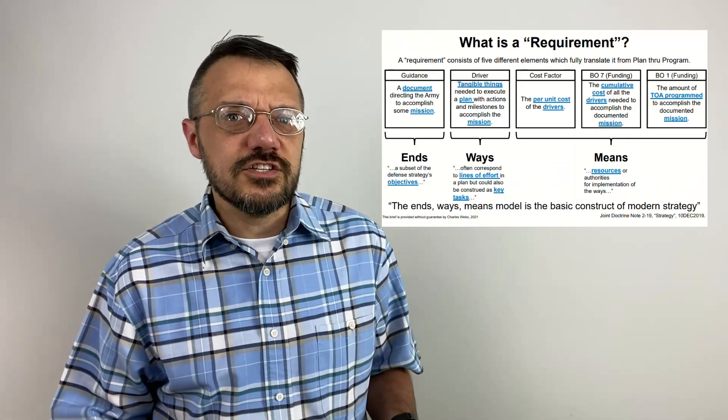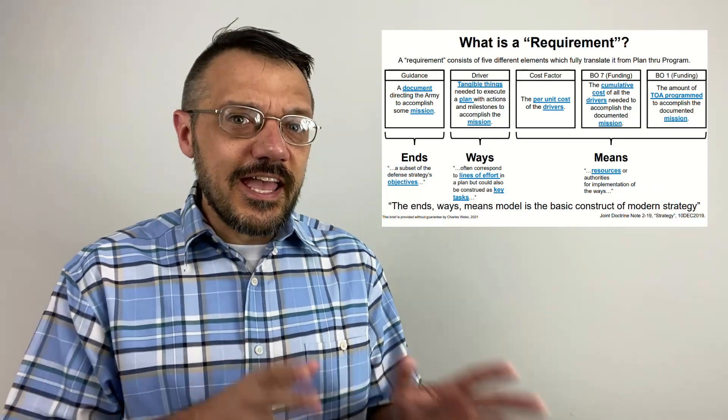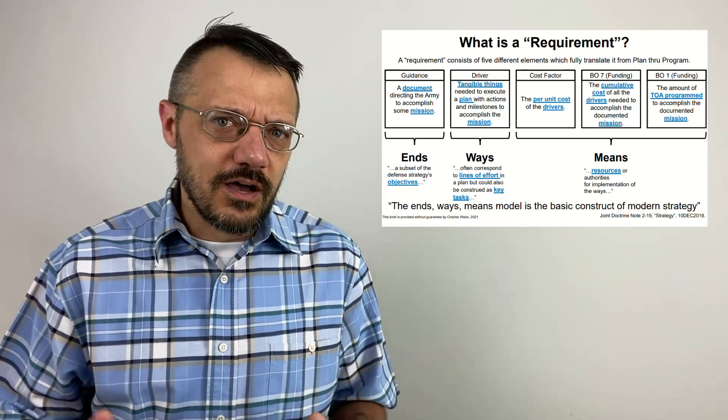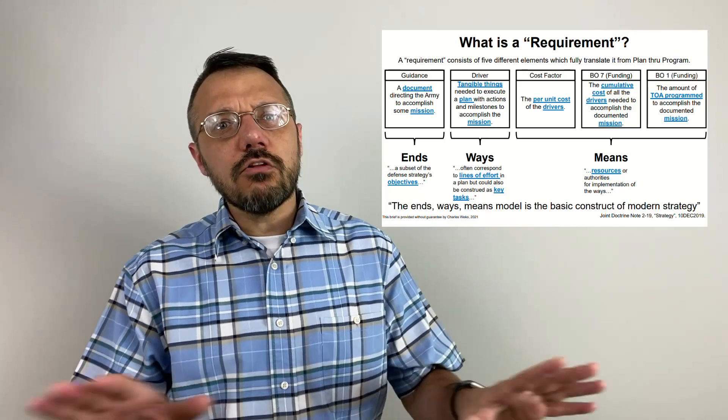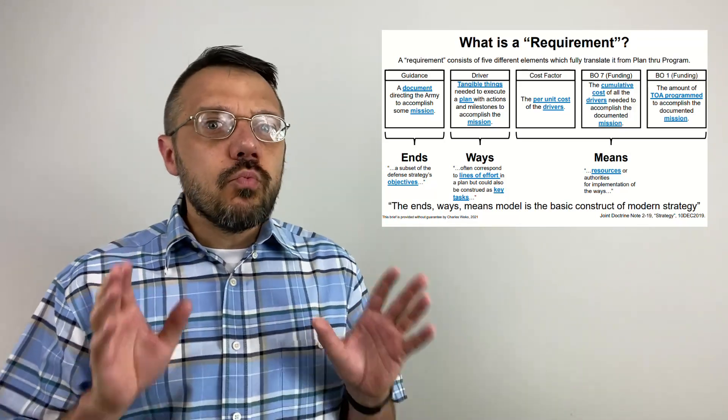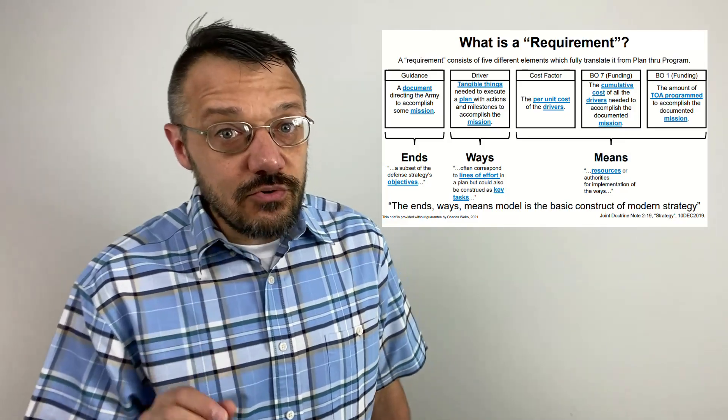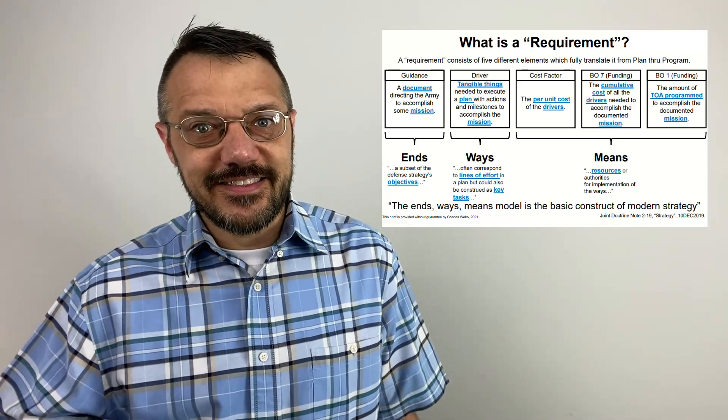Now, if you've been to War College, you'll probably notice that this is really close to the ends, ways, and means model. And I understand if it all looks like annoying, bureaucratic minutia. But if you want your mission to get the resources that it needs, you have to be able to connect the dots. Here's an example. Those guys teaching the ends, ways, and means model up at the Army War College.